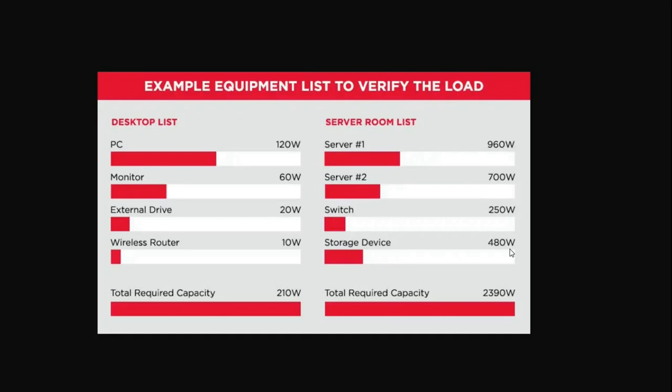A wireless router is about 10 watts. These are the minimums, so if you have one PC, one monitor, one external drive, and one wireless router, the total you need is 210 watts. This is for a traditional, regular computer that you have at home or on your desk.